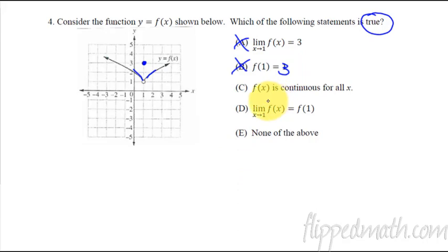F of x is continuous. No, it's not. There's a hole right there, so it's not continuous. The limit equals the same as f of 1. Nope, we already showed that up here. The limit is equal to 1, and f of 1, that just means what's the y value? And the y value, we already showed, was equal to 3. Therefore, these are not the same. The limit's down here at 1, and the y value's up there at 3. So not that one. None of the above.